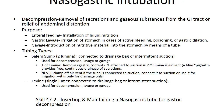From chapter 47 on bowel elimination: nasogastric intubation for decompression is the removal of secretions and gaseous substances from the GI tract for relief of abdominal distention. The NG tube can also be used for internal feedings — installing liquid nutrition — for gastric lavage in cases of active bleeding, poisoning, or gastric dilation, and as a method of gavage.